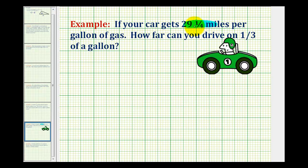Well, this mileage here is per one gallon of gas. So if you want to know how much you can go on one-third of a gallon, the question really becomes what is one-third of 29 and one-fourth? And of means to multiply. So we need to multiply one-third and 29 and one-fourth.